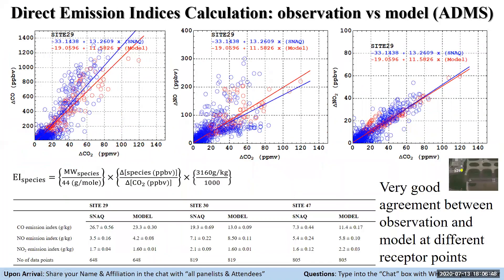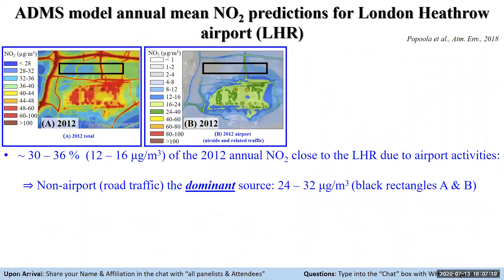This slide shows the model performance against observations, exemplified by site 29. The model does a good job capturing the emission patterns evident in the scatter plots, and also in the estimation of emission indices as shown in the table here, reproducing varying emission indices at different sites for different species.